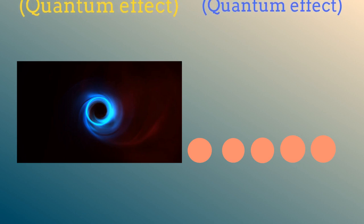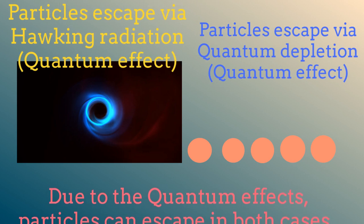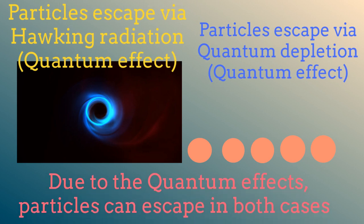Now let's go to the quantum regime. Quantum mechanically, particles can indeed escape from the black hole. This occurs through the process called Hawking radiation, which corresponds to a quantum effect. In a similar way, quantum mechanically, some bosons can escape from the condensate even if the temperature of the system is absolute zero. This phenomenon has been observed experimentally and it is called quantum depletion.